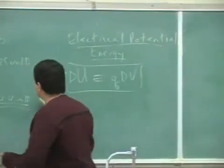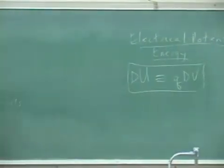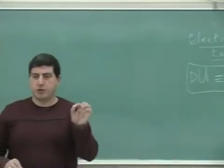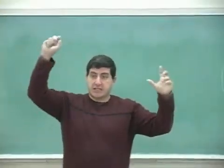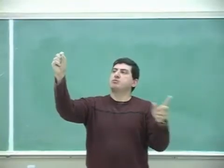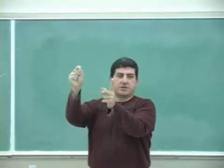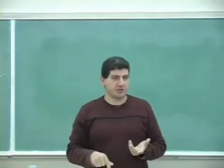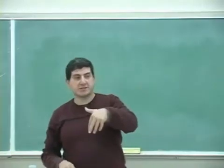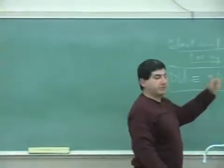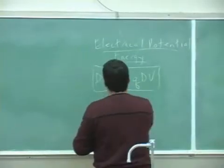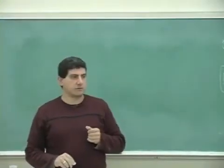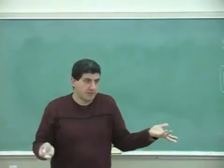Q delta V — when you place a charge inside of a potential field and that charge moves between two equal potential surfaces, it's going to lose or gain potential energy. The potential energy lost or gained is equal to Q times the difference of the potential. The units of this should be joules, since it's energy.